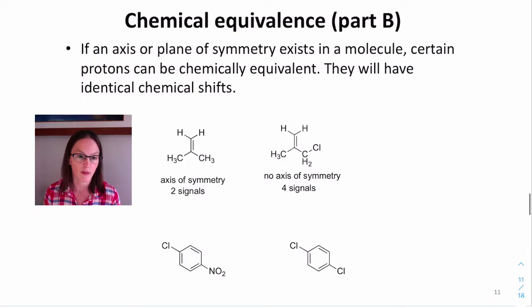The next idea for chemical equivalence is when we have a plane of symmetry in the molecule. For example, this alkene has a plane of symmetry that cuts right down the middle, so the proton on the left is chemically equivalent to the proton on the right. We can call them both HA.